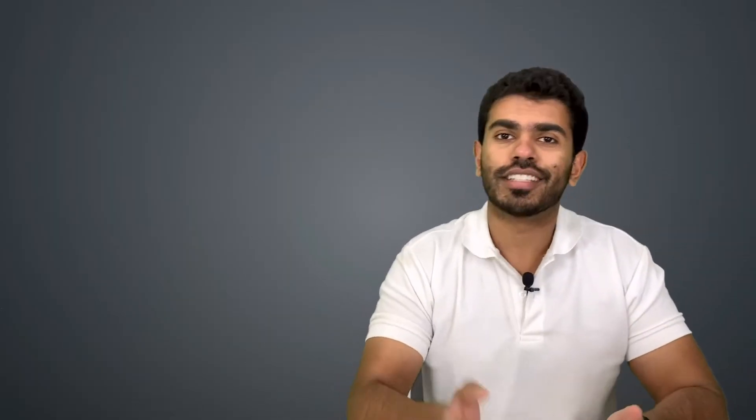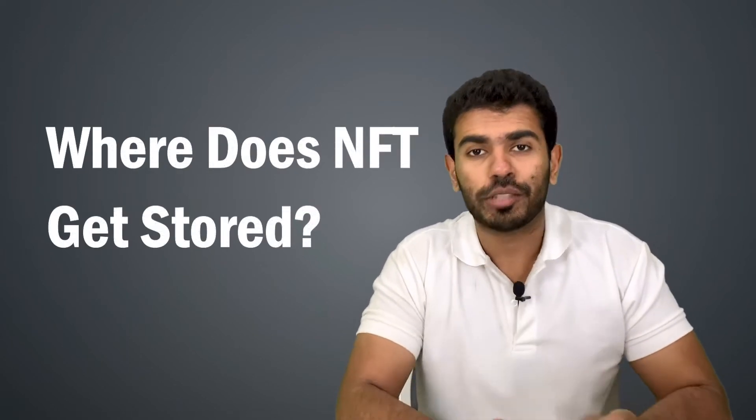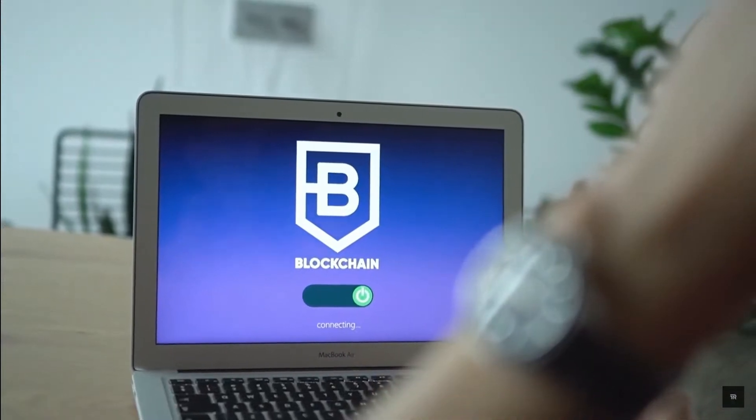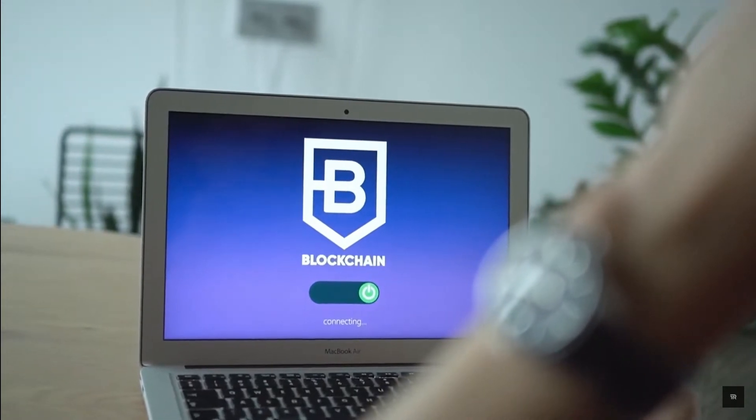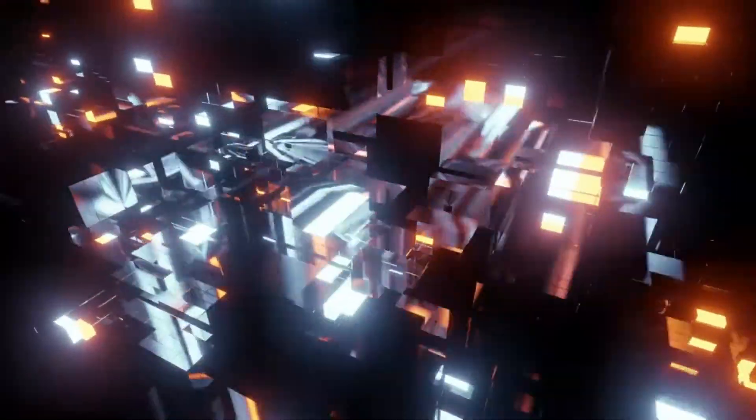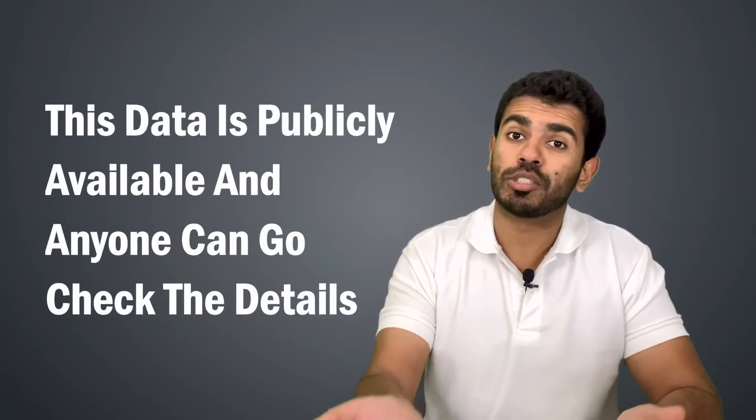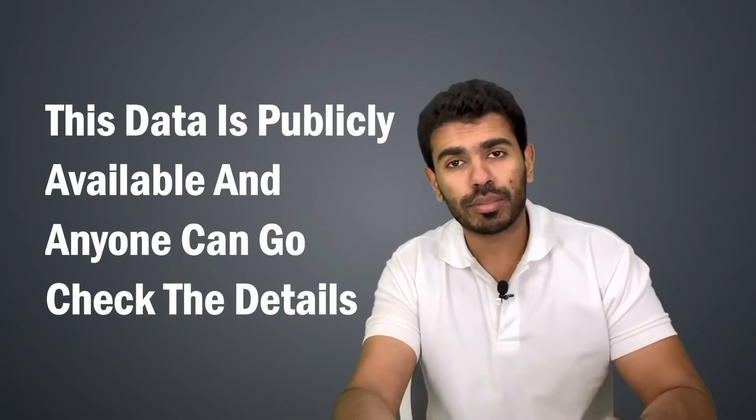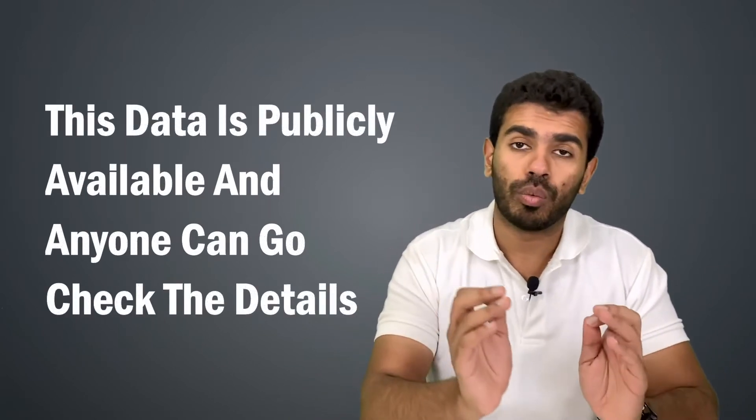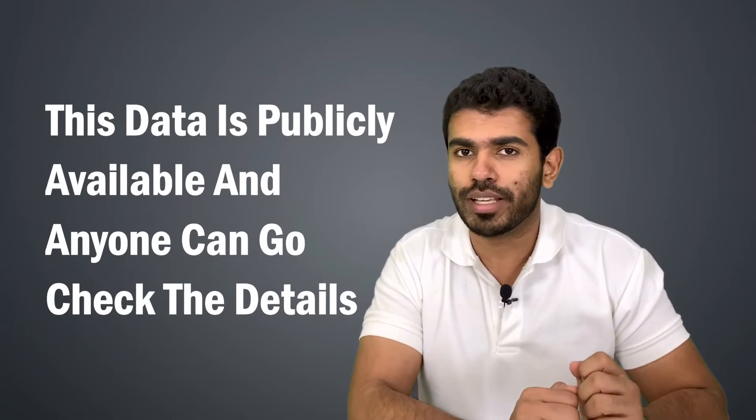Now the big question is where does this NFT actually get stored? This particular NFT gets stored on the blockchain network and hence it is completely transparent. That means that when you are buying an NFT from someone, the entire transaction in terms of the user actually selling this NFT to a new user gets stored in the blockchain network. Hence it is accessible by anyone. Anyone can actually view how many times this particular NFT was sold, when did this particular transaction take place, at what time this particular transaction took place as well.